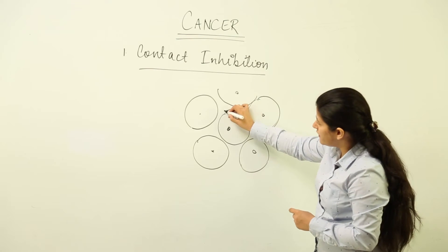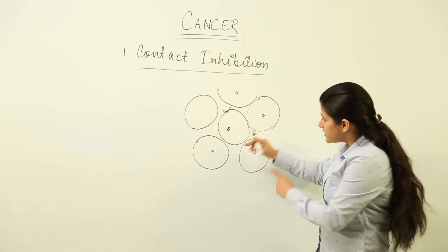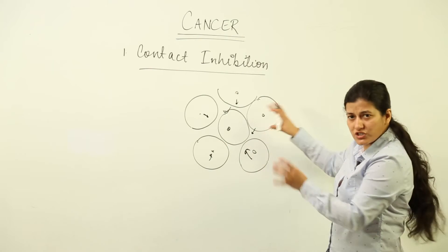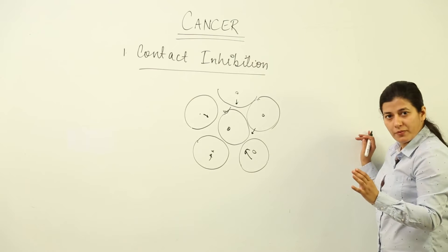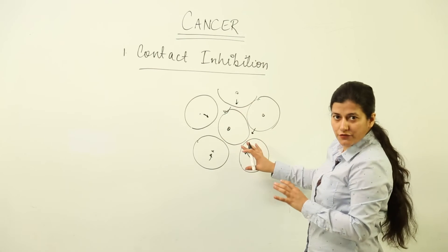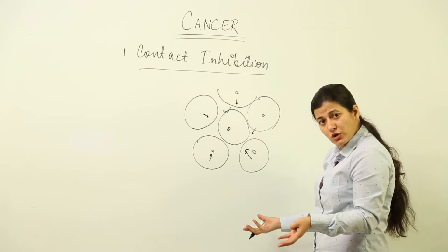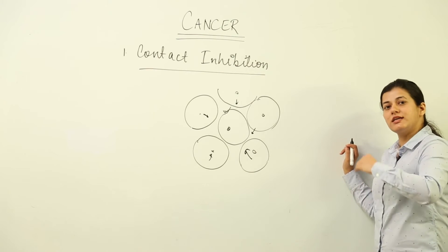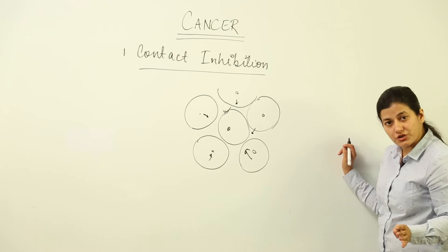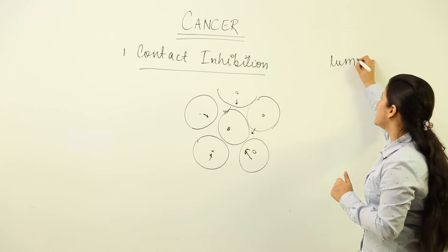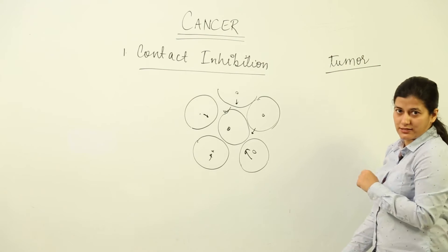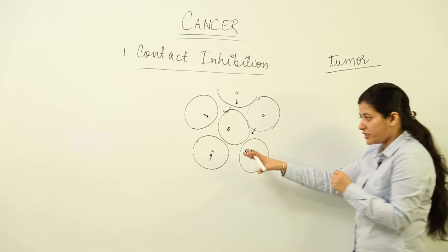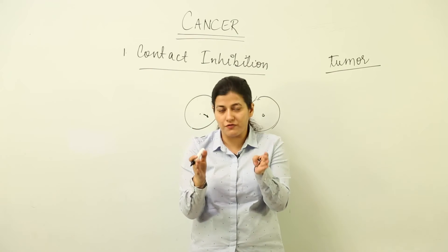What is contact inhibition? Suppose we are talking about a particular cell — that cell has its position in the body. It is not going to allow the cells around it to grow non-stop. But if it loses that ability of contact inhibition, it would grow itself non-stop, and the others would also get infected with that property. That is what cancer cells do — they start growing non-stop without any restriction, leading to a condition known as a tumor. However, every tumor is not cancer.